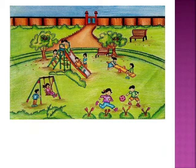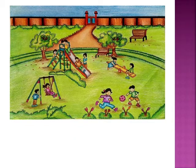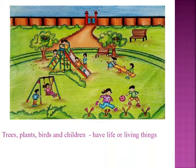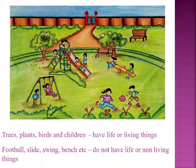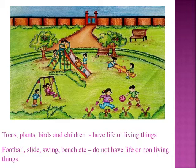Before going into the chapter, let us all imagine that we all are in a playground. See around and list the things which have life in them. As we see in the picture, we have trees, plants, birds and children which have life, and also a few more things like football, slide, swing, bench, etc., which do not have life. By this, I think you would have got to know we are learning about living things and non-living things in this chapter.